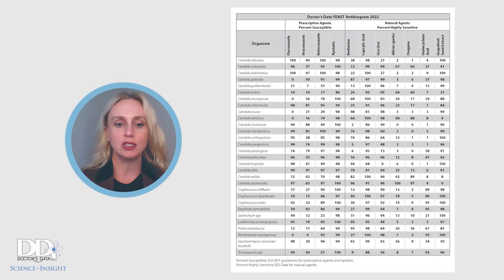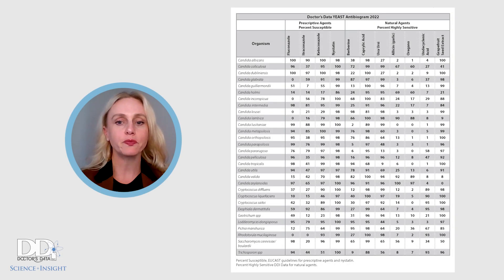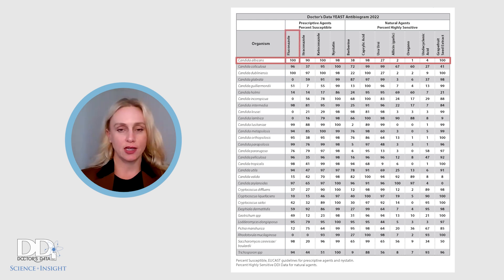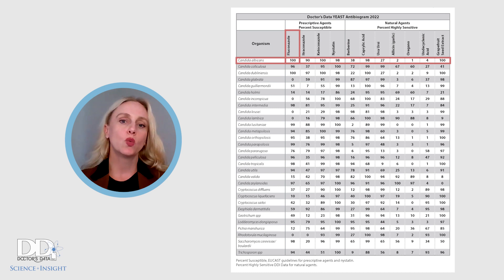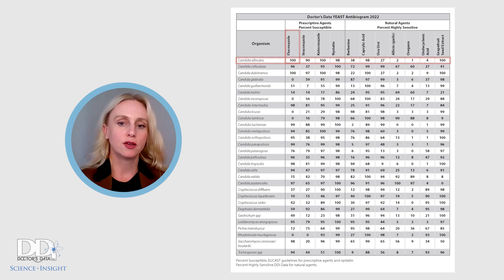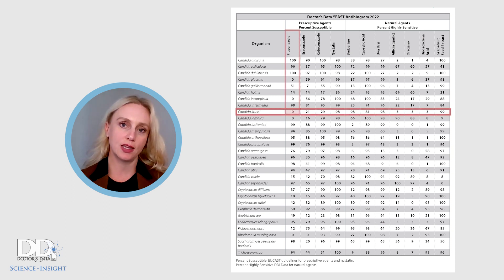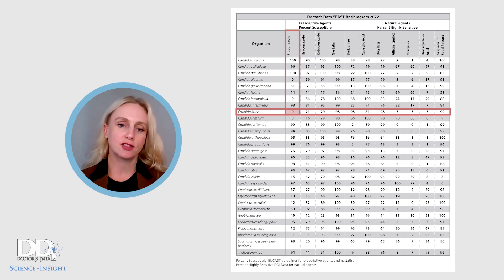With regards to the yeast antibiogram, there are 30 yeast listed. Take a look at the very first row with Candida albicans, a very common yeast — 100% of the samples tested were susceptible to fluconazole. Now take a look further down at Candida crucii, and you will see that 0% of the samples tested were susceptible to fluconazole.